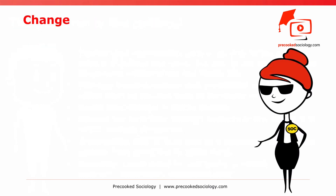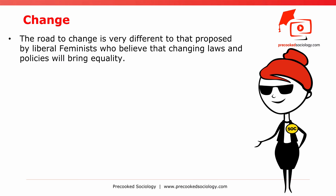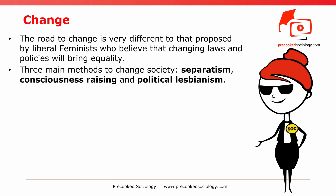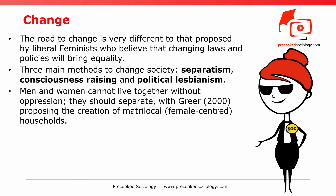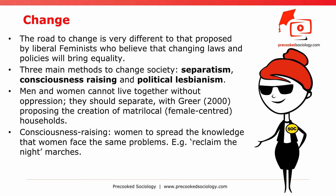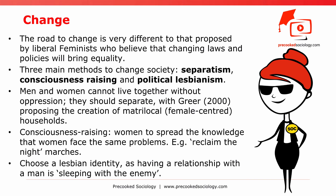For radical feminists, the road to change is very different to that proposed by liberal feminists, who believe that changing laws and policies will bring equality. Radical feminists propose three main methods to change society: separatism, consciousness-raising, and political lesbianism. As radical feminists believe men and women cannot live together without oppression, they should separate, with Greer proposing the creation of matrilocal, female-centered households. Consciousness-raising will allow women to spread the knowledge that women face the same problems — examples include reclaim-the-night marches. Finally, women should choose a lesbian identity, as having a relationship with a man is sleeping with the enemy.